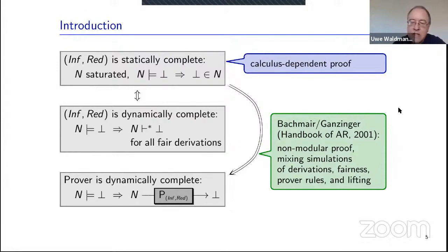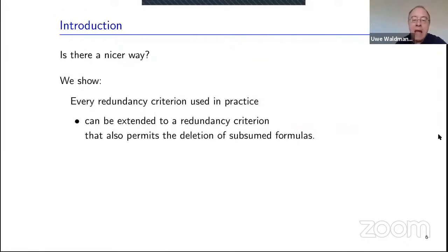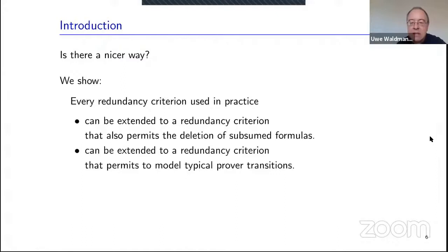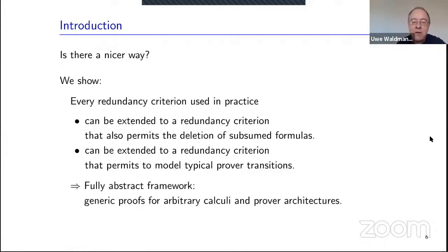The question is: is there a nicer way to do it? We will show that every redundancy criterion used in practice can be extended to one that also permits deletion of subsumed formulas, and further extended to permit modeling of typical prover transitions. As a consequence, we get a fully abstract framework where we can generically prove refutational completeness of a prover architecture that can be instantiated with an arbitrary calculus.